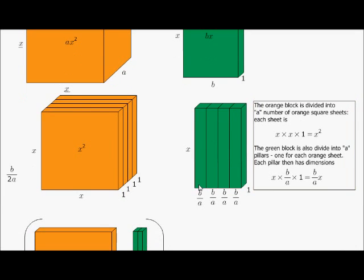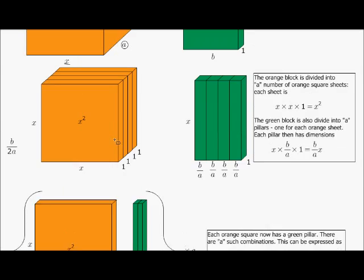Now, for each orange sheet — in other words, each square — I want to give each of those squares a piece of the green block. Since there are a of them, in this case 4, I would have to divide my green block into 4 pieces. If there were 10, the green block has to be divided into 10 pieces. Which means the width is now divided by however many sheets I have. If I had a as the width, I would divide it into a pieces, which means each width will now be b divided by a.